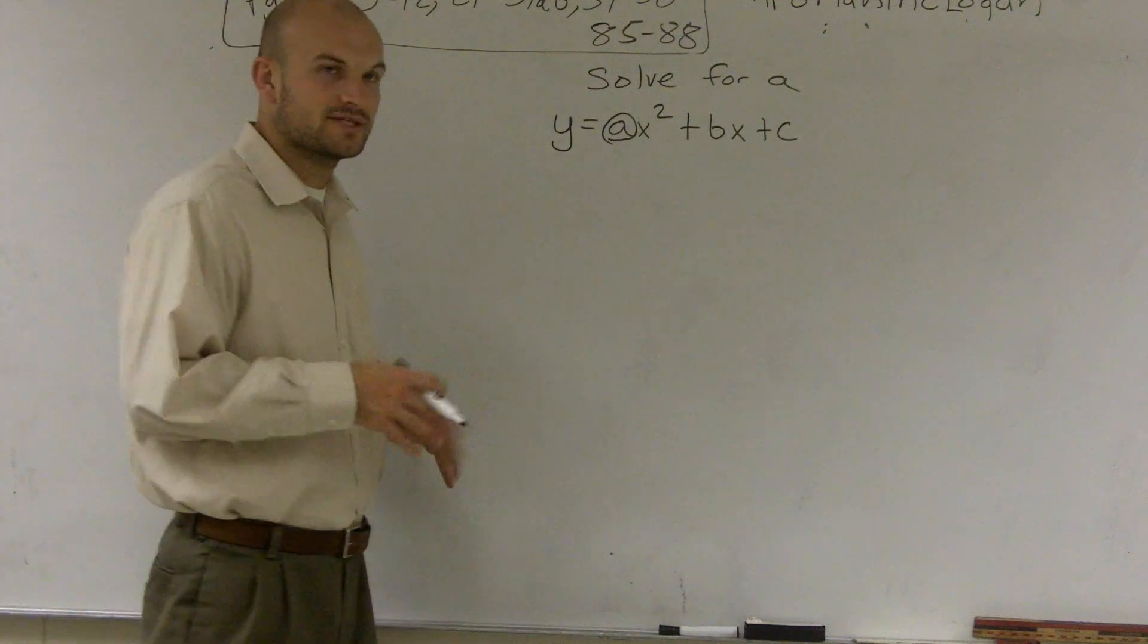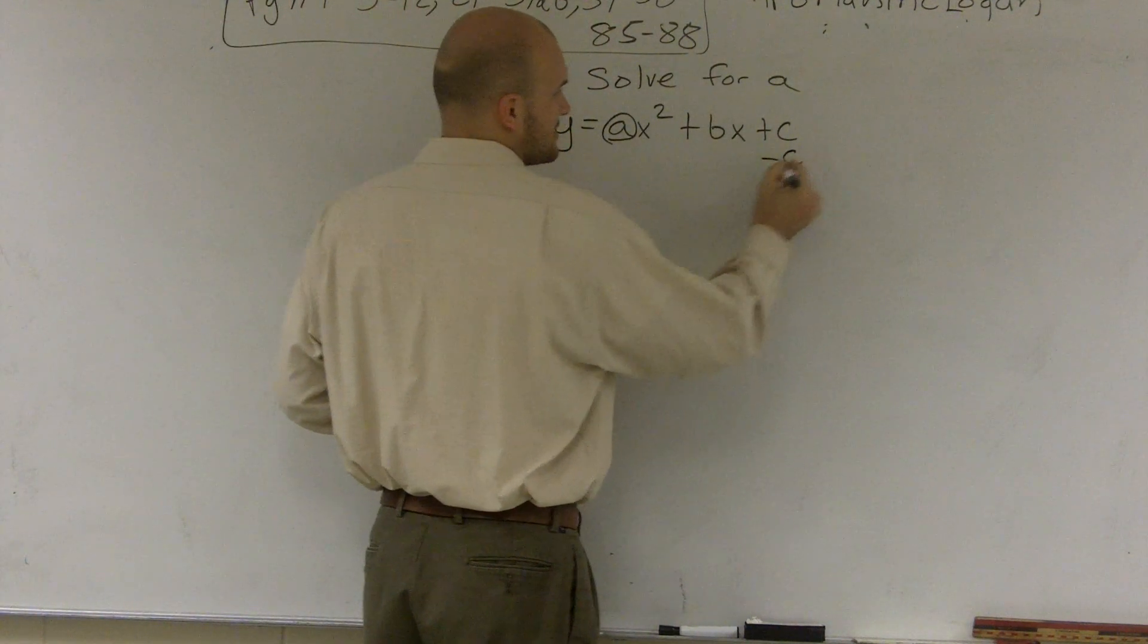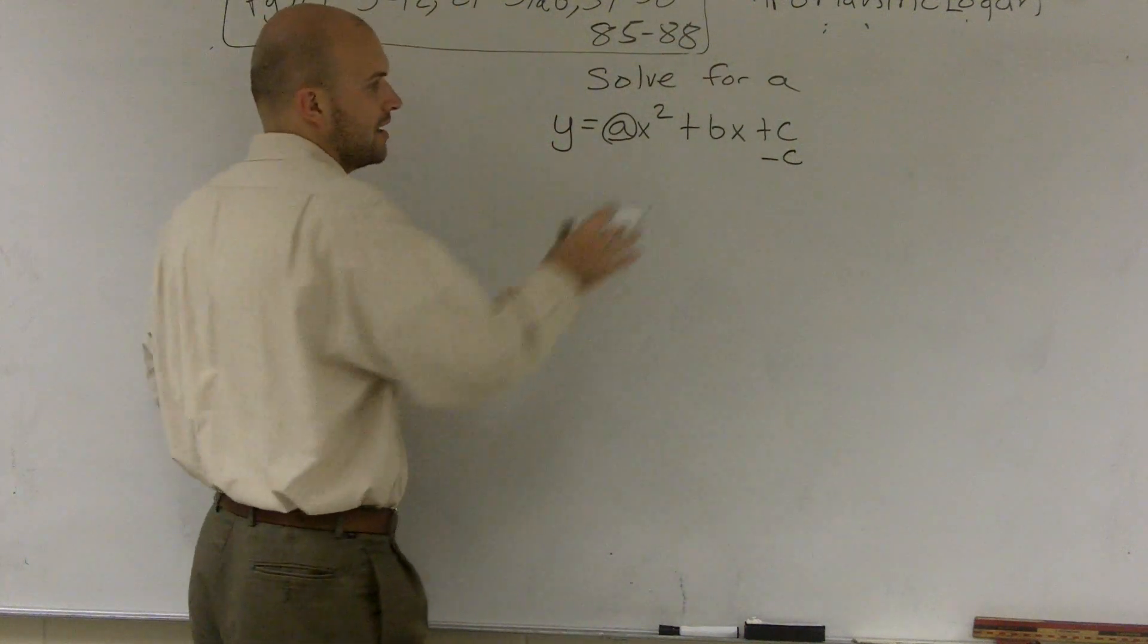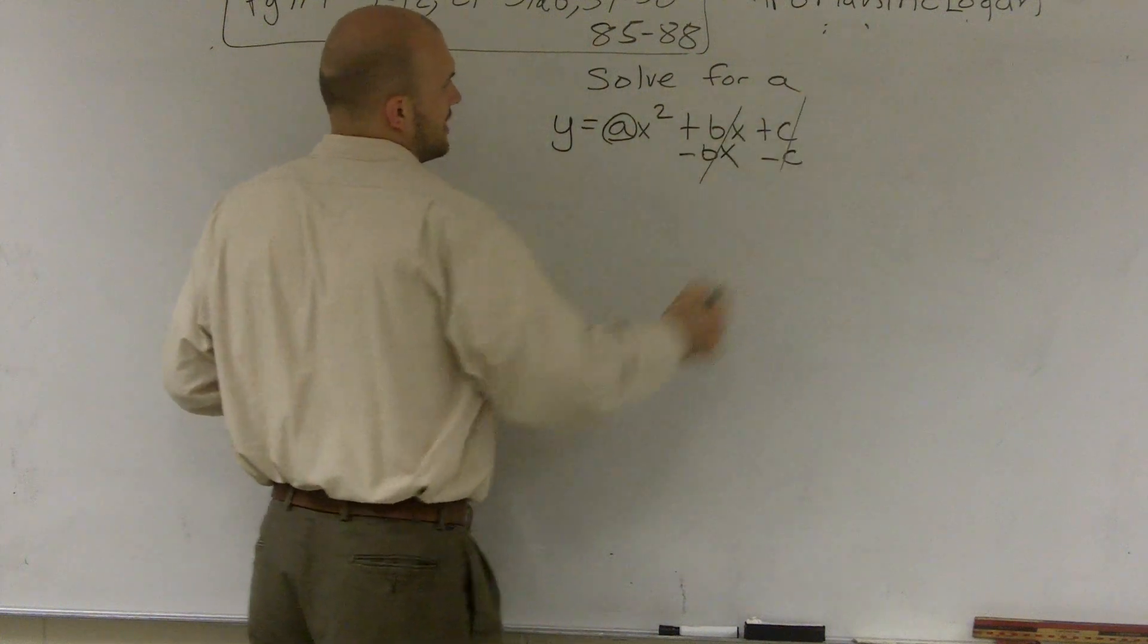So I look over here. I can see there's a couple things that are happening. One thing is I'm adding a c to a, so I'm going to have to subtract the c. I'm also adding a bx. So if I subtract the bx, that's going to cancel those two out.